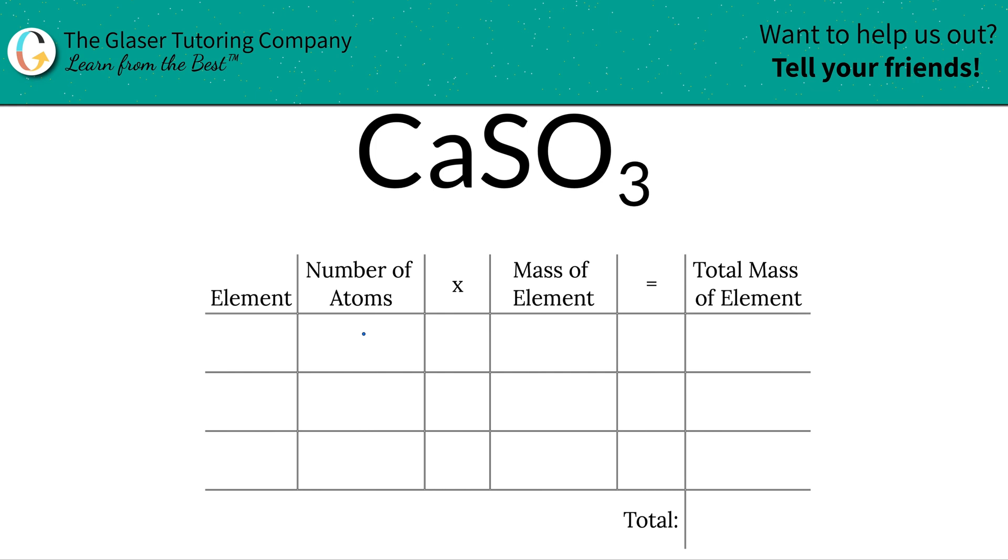So the first thing is I'm going to write down the elements in the compound. So we have calcium, Ca, we have sulfur, S, and we have oxygen, O.